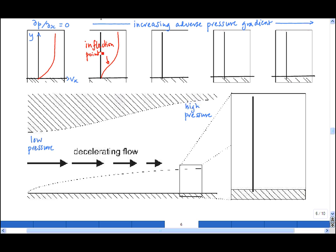As we increase the adverse pressure gradient further, there will come a point where the velocity gradient is zero at the wall. And then of course we always have to end up at the free stream velocity.